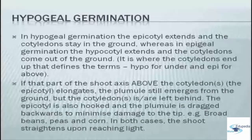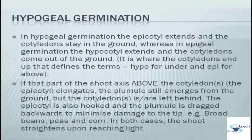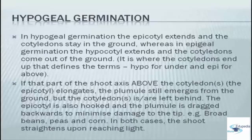If that part of the shoot acts above the cotyledons, the epicotyl elongates and the plumule still emerges from the ground, but the cotyledons are left behind. The epicotyl is also hooked and the plumule is dragged backward to minimize damage to the shoot tip. Examples include broad beans, peas, and corn.